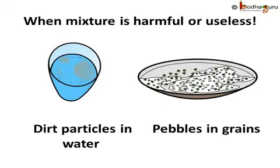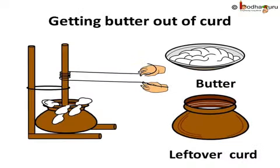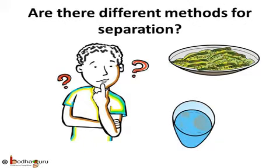Like, remove the impurities from water or remove pebbles from the grains. Not only harmful mixtures like impure water, sometimes useful mixtures can also be unwanted. For example, curd is useful for us, yet people churn the curd to get butter from it. This process of removal of impurities or undesirable substances from various types of mixture is called separation. When mixture is undesired, can we carry out separation in the same way, or is more than one method required for different kinds of substances? Let us find it out.